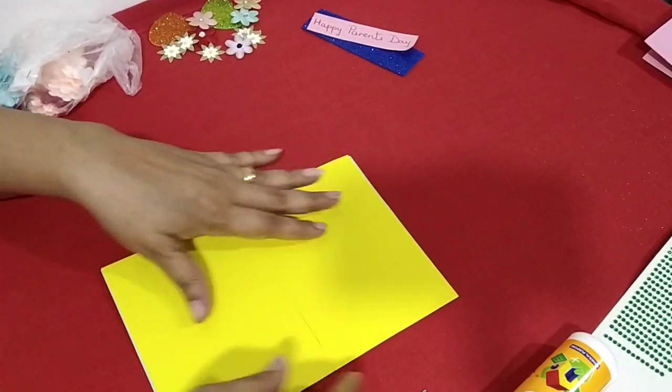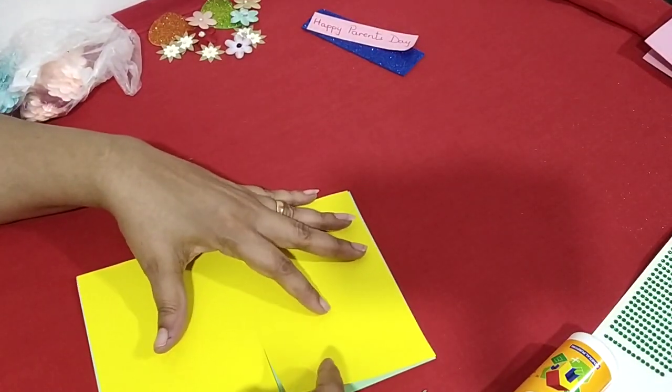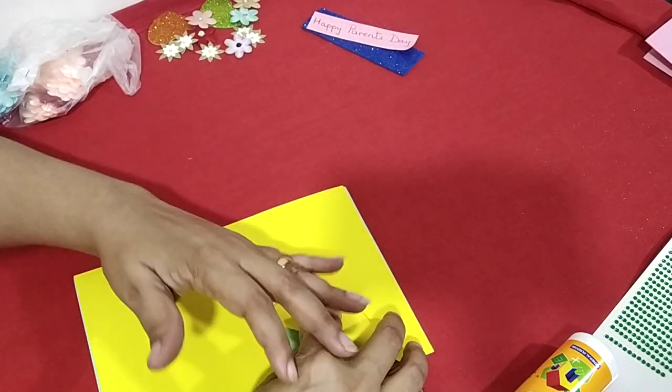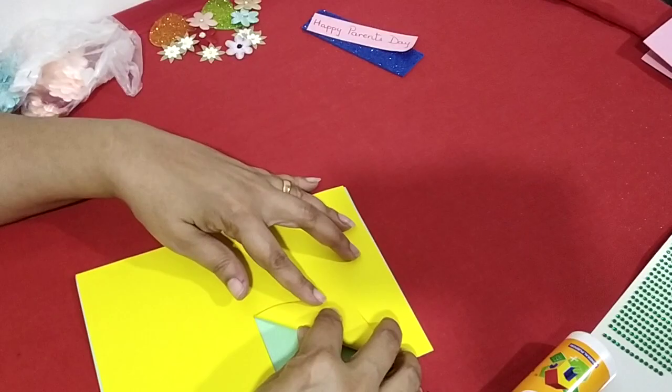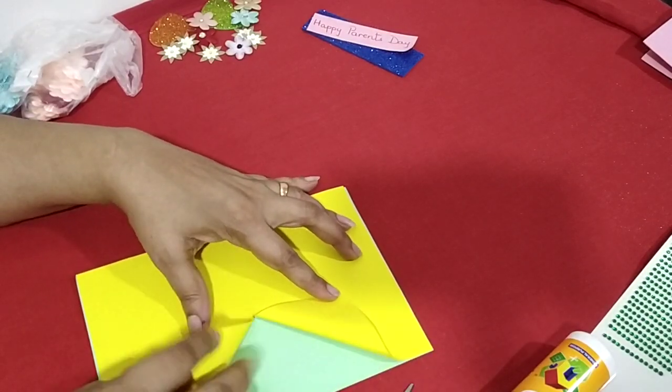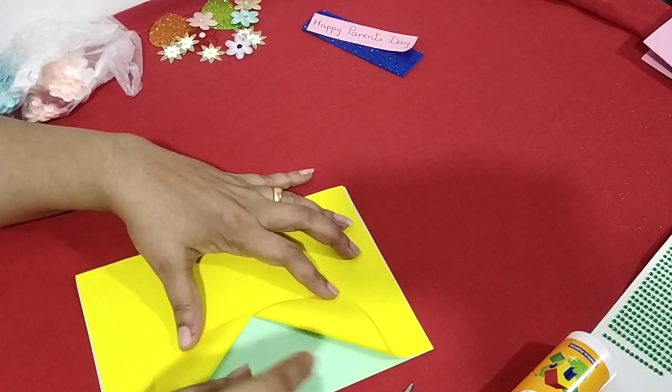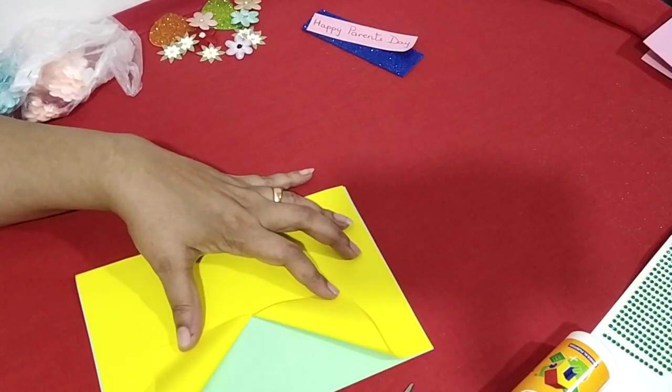Now what you do is since you have slit it, you take your paper and fold it like this here, and fold it like this here. Don't press it here, and don't press it here.